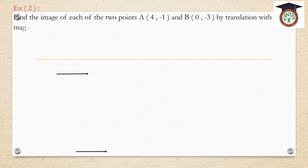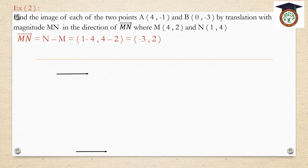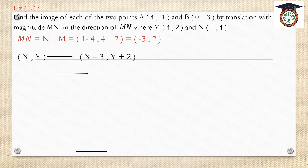Find the image of each of the two points A(4, -1) and B(0, -3) by translation with magnitude MN in the direction of MN, where M is (4, 2) and N is (1, 4). Firstly, we need to find vector MN: it is N minus M, which is (1 minus 4, 4 minus 2), giving (-3, 2). So the rule of translation is (x minus 3, y plus 2).